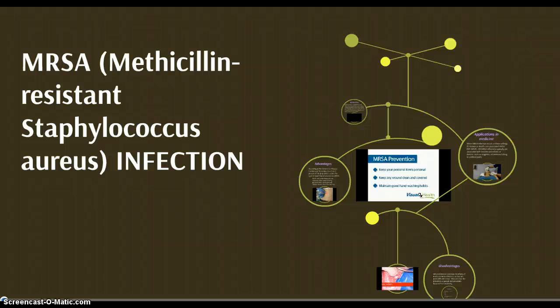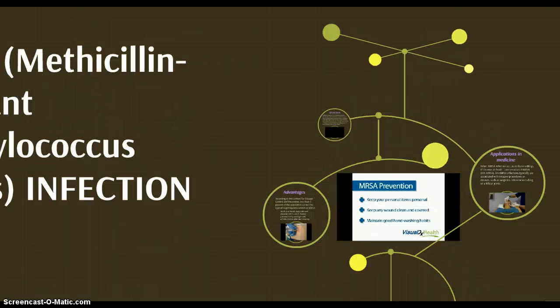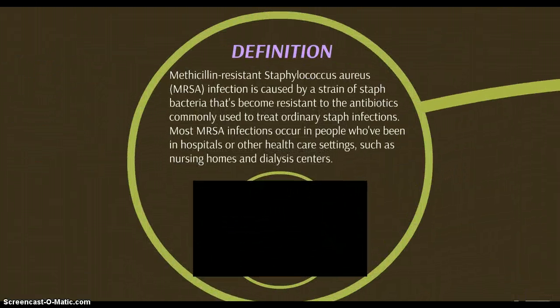MRSA — Methicillin Resistant Staphylococcus Aureus Infection. Definition: Methicillin Resistant Staphylococcus Aureus Infection is caused by a strain of staph bacteria that has become resistant to the antibiotics commonly used to treat ordinary staph infections.